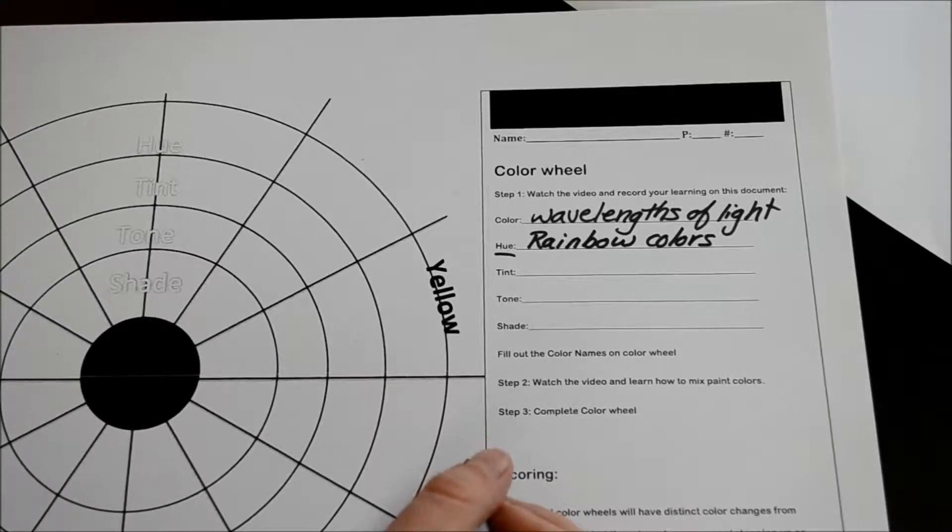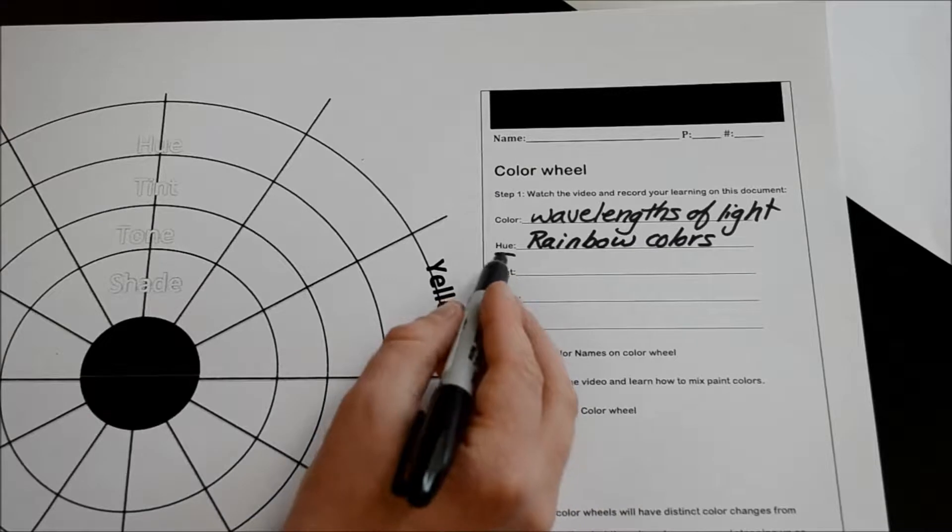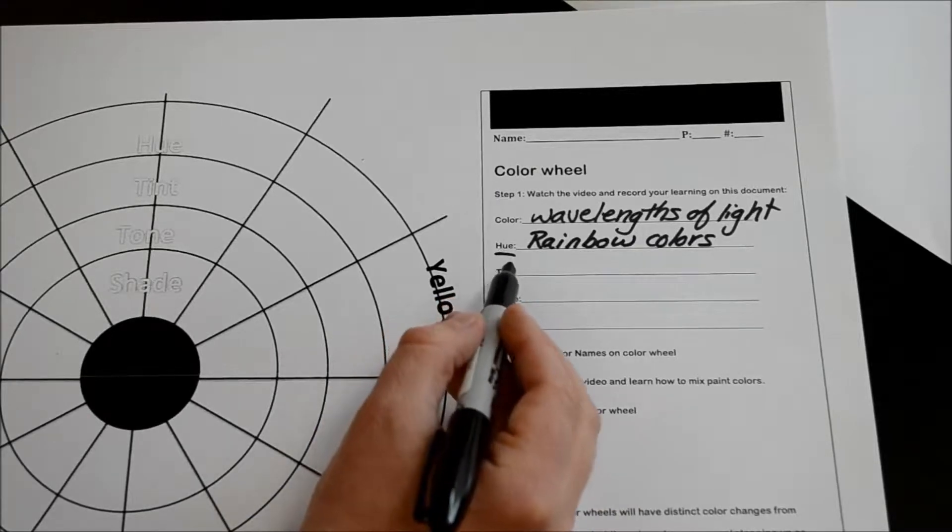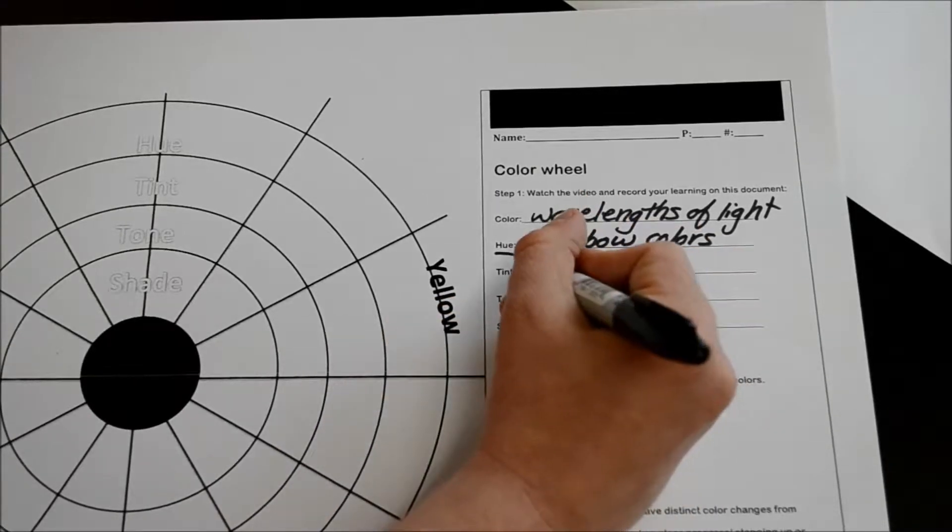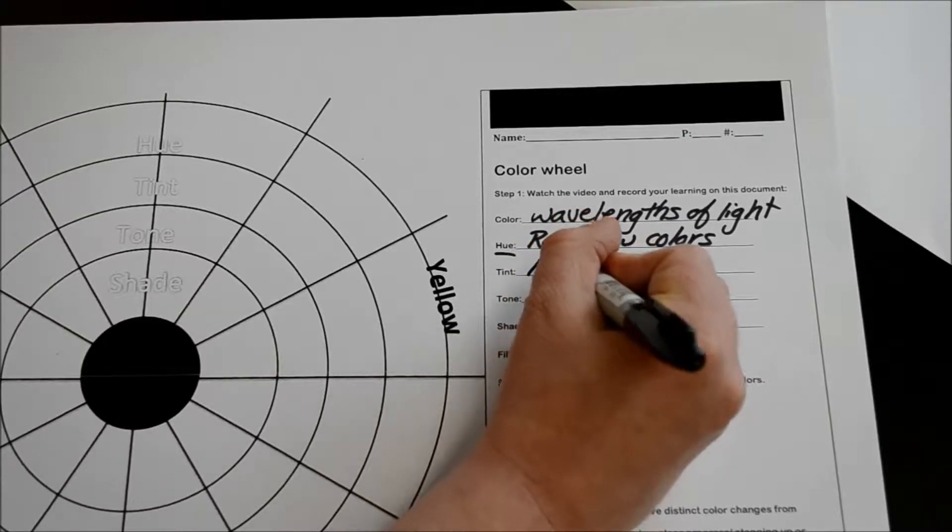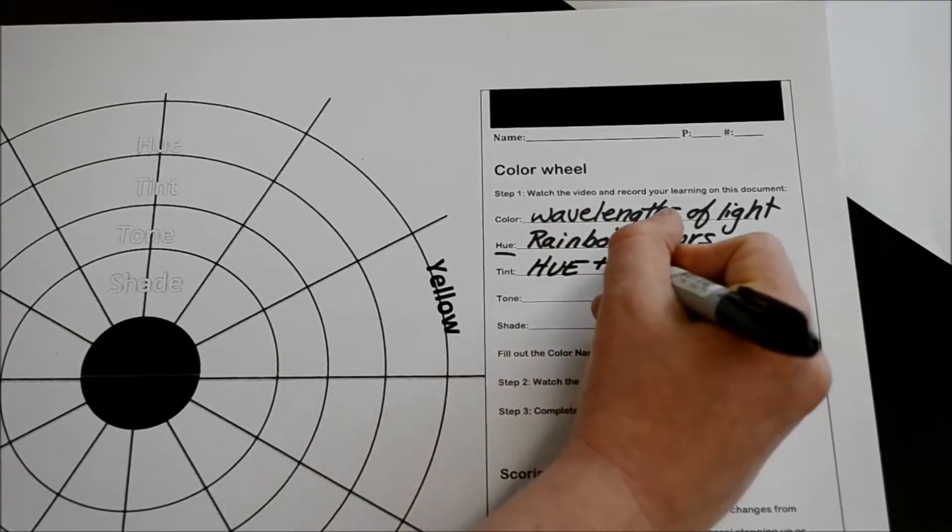In other words, red is an example of a hue, but pink is not. A tint is a hue plus white.